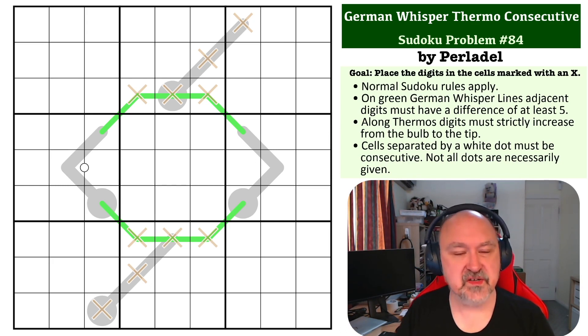The way this one works is you need to place the digits into the cells marked with an X. No other digits need to be placed. There'll be a link below where you can find a copy of this problem to try it for yourself.